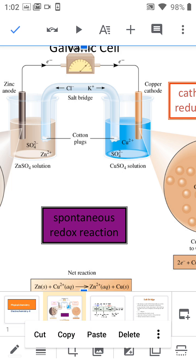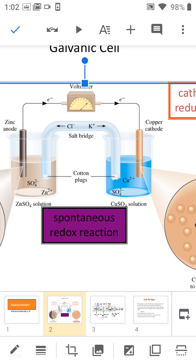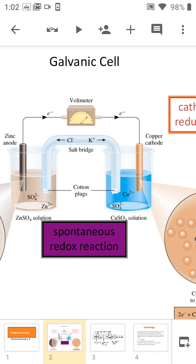And these two electrodes are connected externally by external wire and connected through a voltmeter for measuring the voltage. And similarly, these two beakers are connected by a salt bridge.